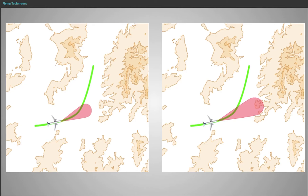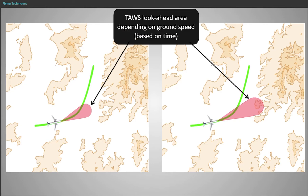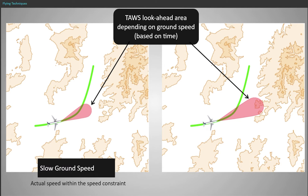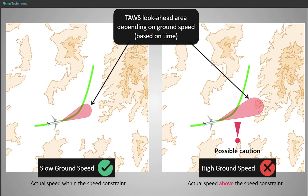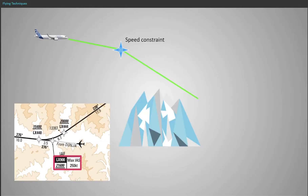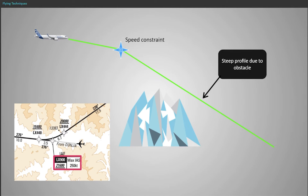The alerting envelope of the Terrain Awareness and Warning System, TAWS, is partly based on ground speed along with other factors. In some specific cases, speed constraints are assigned to certain waypoints in order to prevent TAWS warnings and to limit the potential of cautions being given. Additionally, speed constraints might also be assigned to waypoints in order to assist the crew in descent energy management.